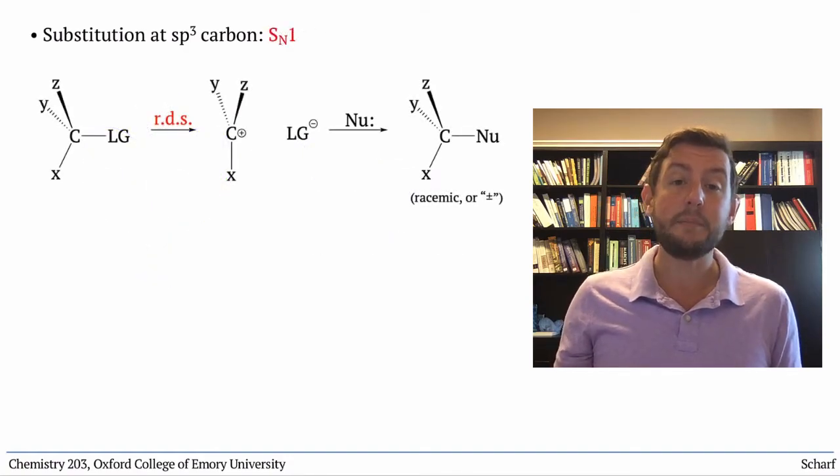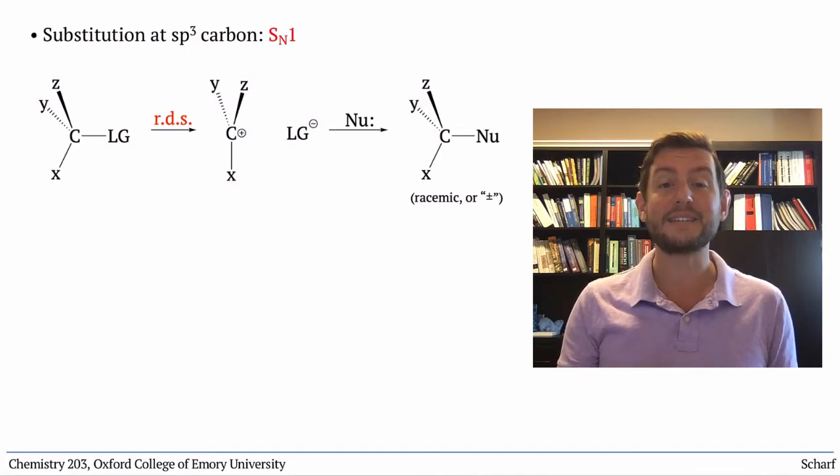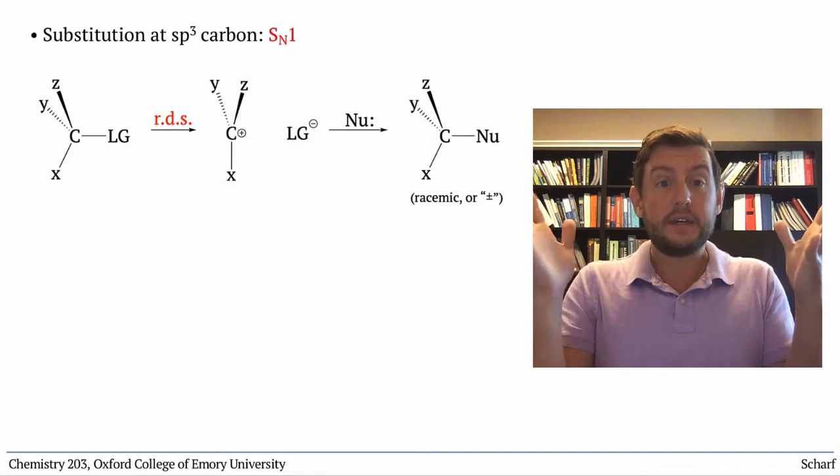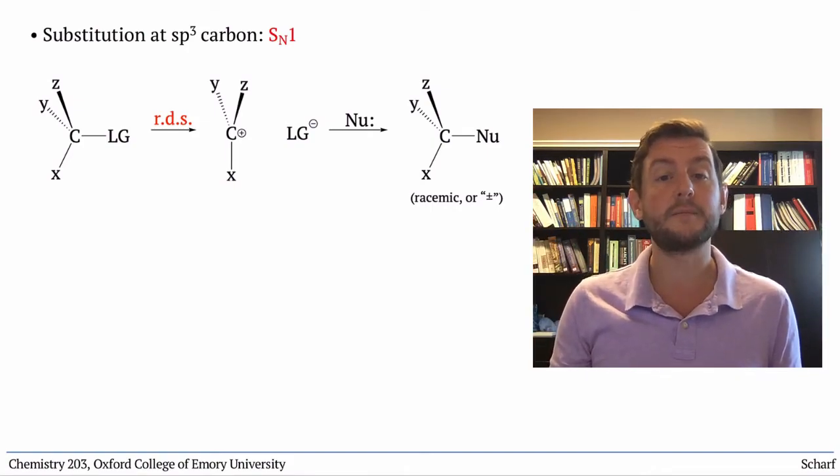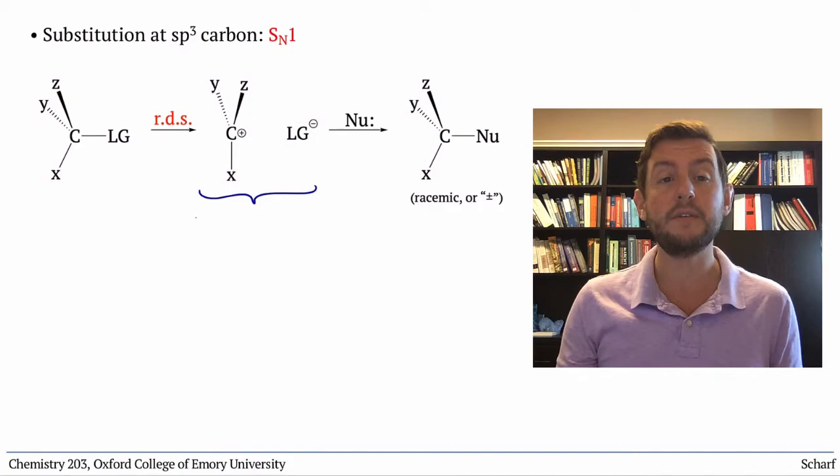Since the rate determining step in this reaction, called the SN1 reaction, is the leaving group just leaving, it's referred to as unimolecular and primarily depends on the leaving groups, which need to be good, and the carbocation, which needs to be relatively stable.